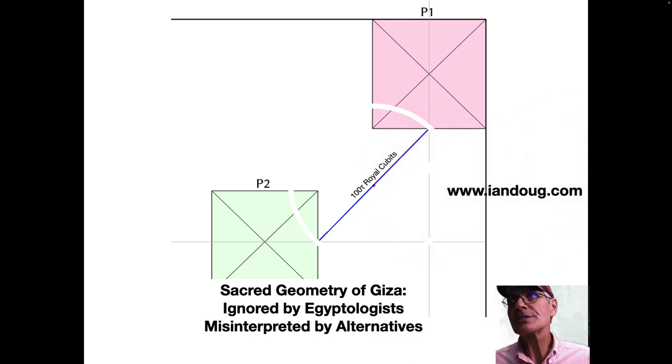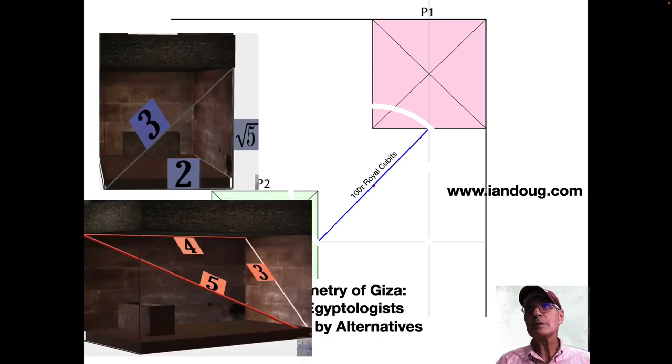Now Ian Douglas does tremendous work at Giza. And he's a master of the uses of pi and phi all over the Giza Plateau. And I mention this because Ian told me that this is probably the single best use of tau on the Giza Plateau. After I showed him, I discovered it. So it's a unique placement finding of tau on the Giza Plateau.